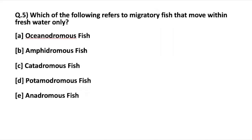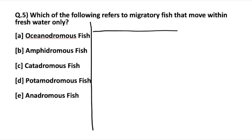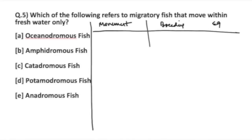The last question: which of the following refers to migratory fish that move within fresh water only? We will discuss each category and then arrive at the answer. I divide this into three aspects: movement, breeding ground, and example.